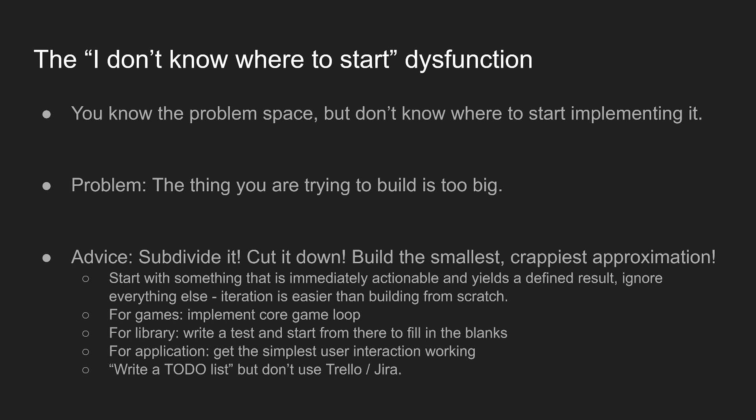For games, that might mean implementing a core game loop — I can tell you that the difference between games I finished and games I haven't was always whether I started by implementing the core game loop. For a library, it might be writing a test and filling in the blanks, or writing the first function of the API even though you have no idea how to implement the backend. For an application, just get the simplest user interaction working — let the user click that thing. The thing doesn't have to do anything yet; just get something working and then iterate. It will be a crappy approximation, but now you can iterate.